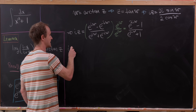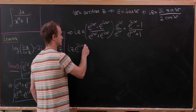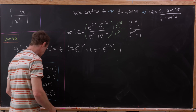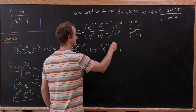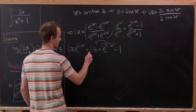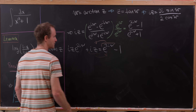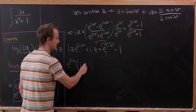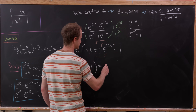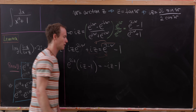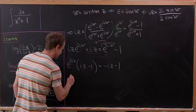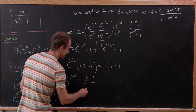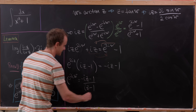Cross-multiplying, we have iz times e to the 2iw plus iz equals e to the 2iw minus 1. Moving everything with an e to the 2iw to the left and everything without to the right, we get e to the 2iw times (iz minus 1) equals negative iz minus 1. So e to the 2iw equals negative iz minus 1 over iz minus 1.